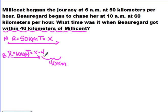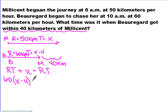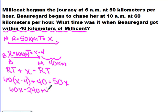Looking at the diagram, Millicent traveled the whole distance and Beauregard traveled part of it. If Beauregard had traveled 40 kilometers more, it would equal Millicent's distance. So the equation is: Beauregard's rate times time plus 40 equals Millicent's rate times time. That gives us: 60(x − 4) + 40 = 50x. Distributing: 60x − 240 + 40 = 50x, which simplifies to 60x − 200 = 50x.